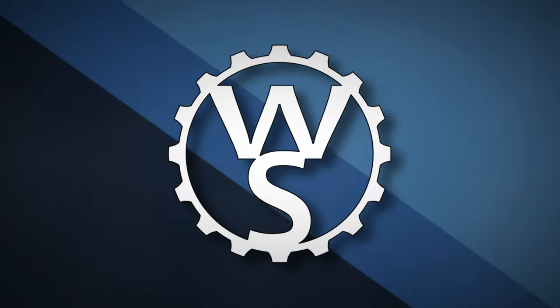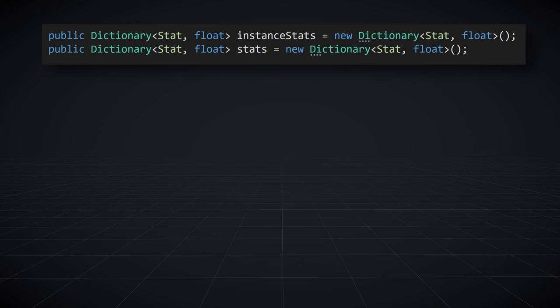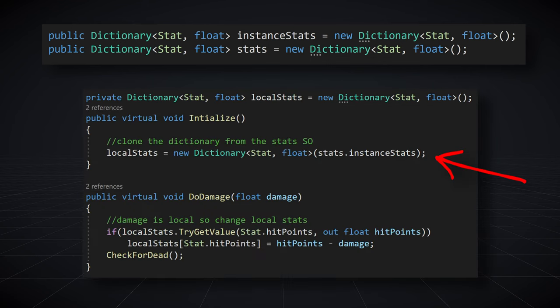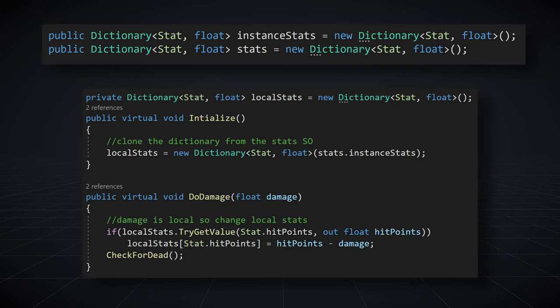So let me propose fix number two. For stats that need to be local to a particular instance — things like health or hit points — you can create an additional dictionary on the scriptable object, and when a unit is created it copies that dictionary onto the instance. Functions such as doDamage that change the value of a local stat simply change the local value instead of changing the value on the scriptable object. This second fix, while a bit more complicated, is likely my preferred solution moving forward, as the scriptable object still defines the stats for a particular object type while individual objects can control their own individual stats if needed. That's how I'm doing stats for my project — follow-up video on the upgrade system is coming. Happy game designing!